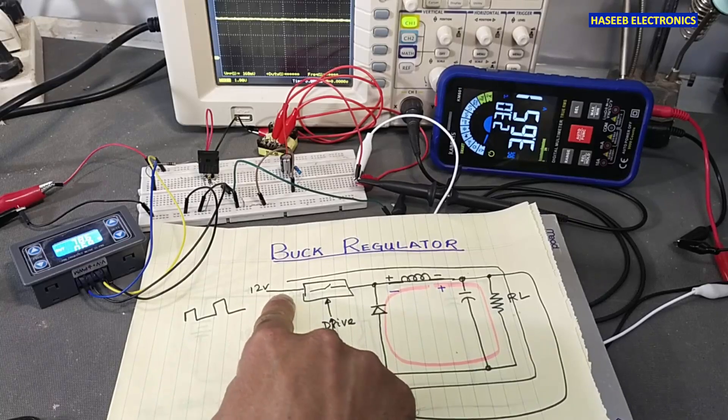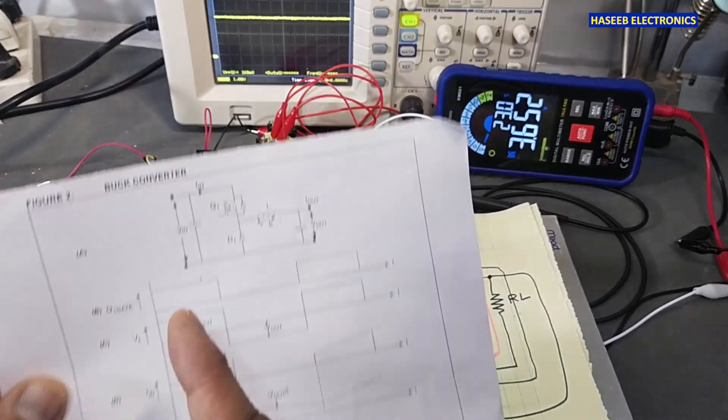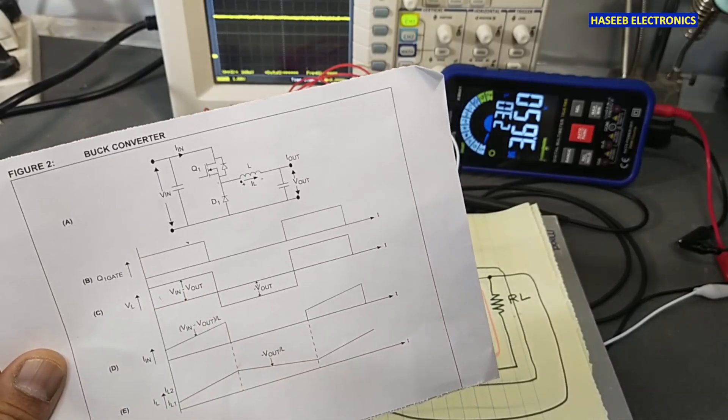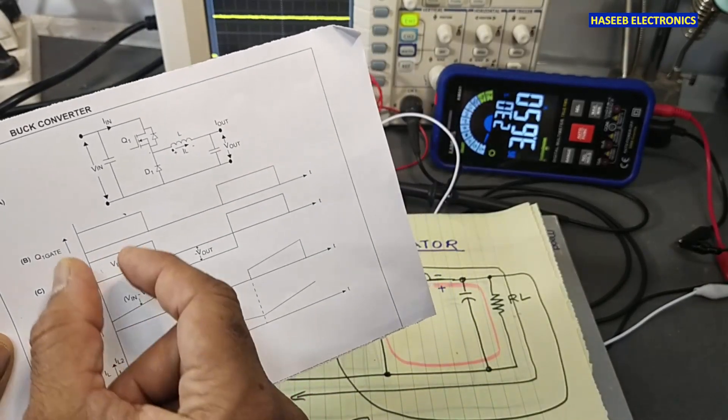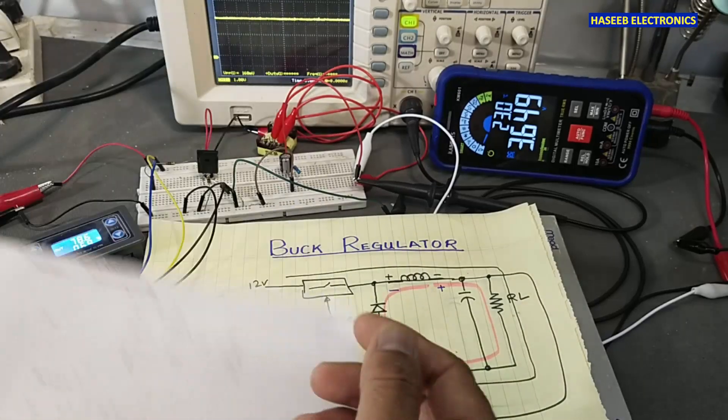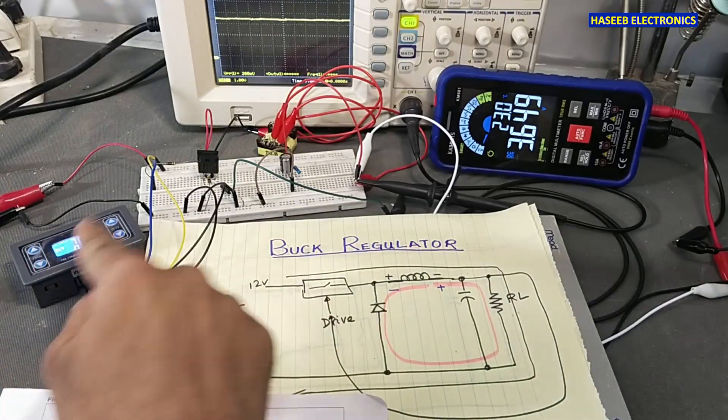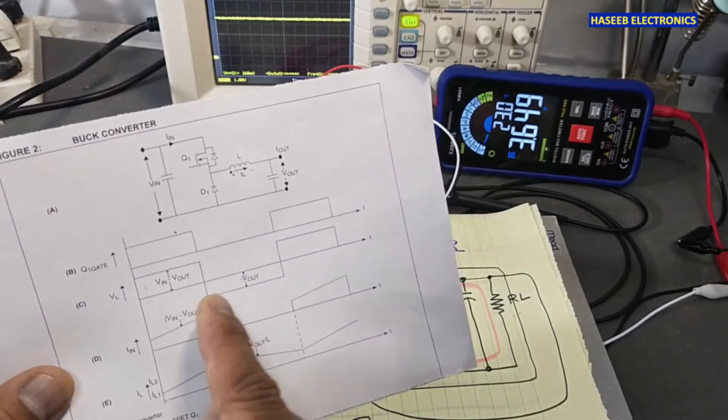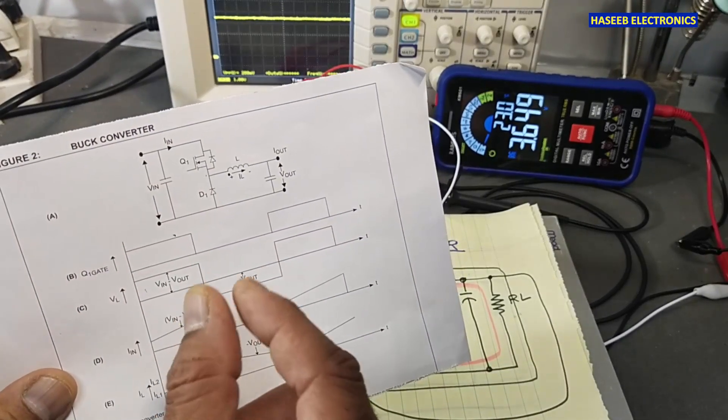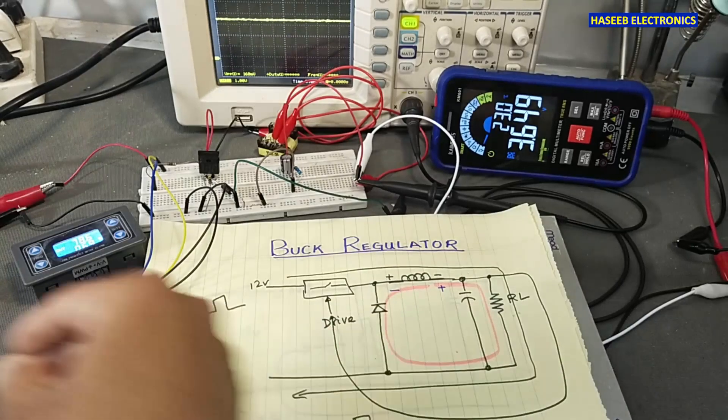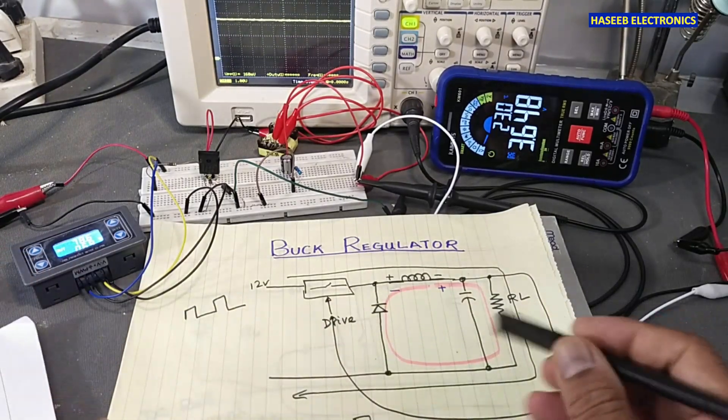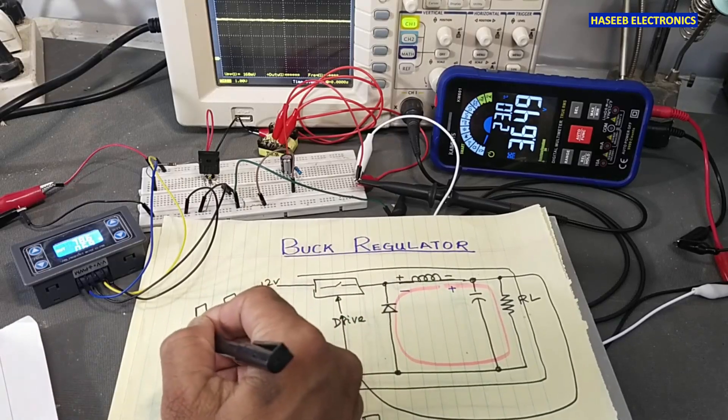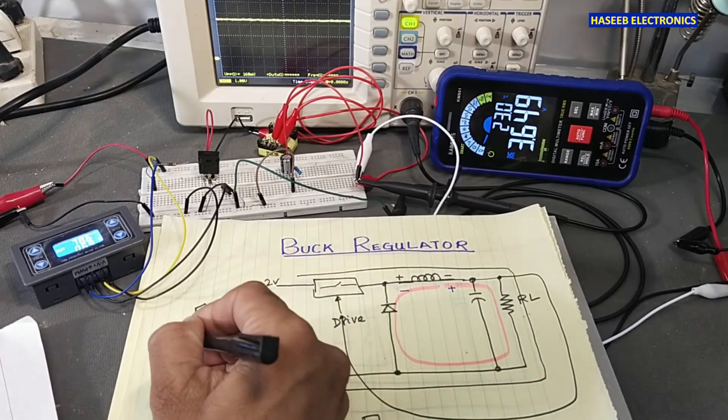It will make slices of these 12 volts when gate pulse is arriving. For example, we are working at 78 kilohertz, so it will make 78,000 pieces in one second, and each piece will be controlled by this PWM controller.